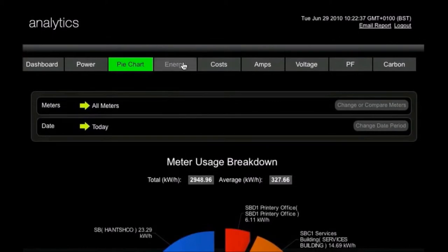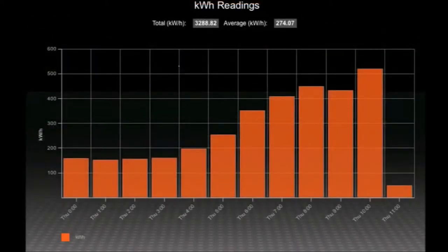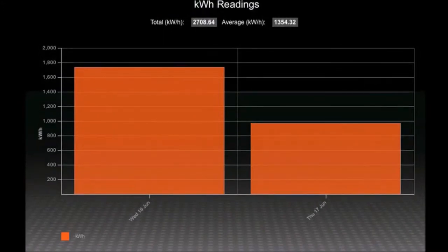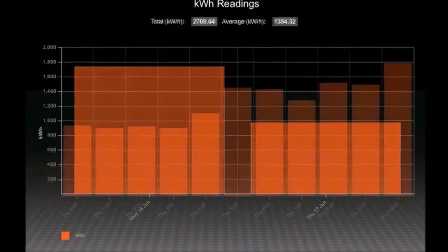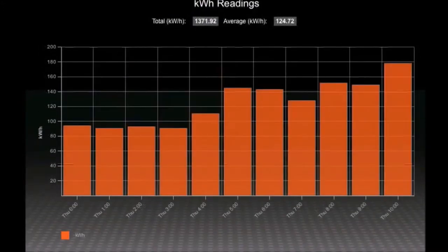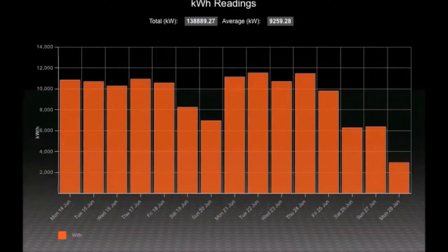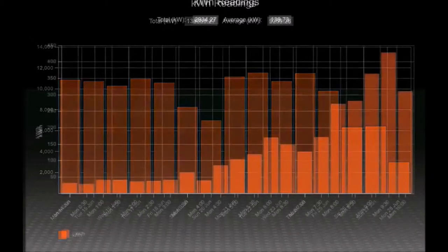The Energy tab is where you get a more traditional view of your energy consumption, again to apportion costs, which helps occupants to become more responsible for the energy they use. It also means you can target reductions and monitor progress for specific areas of your organization.